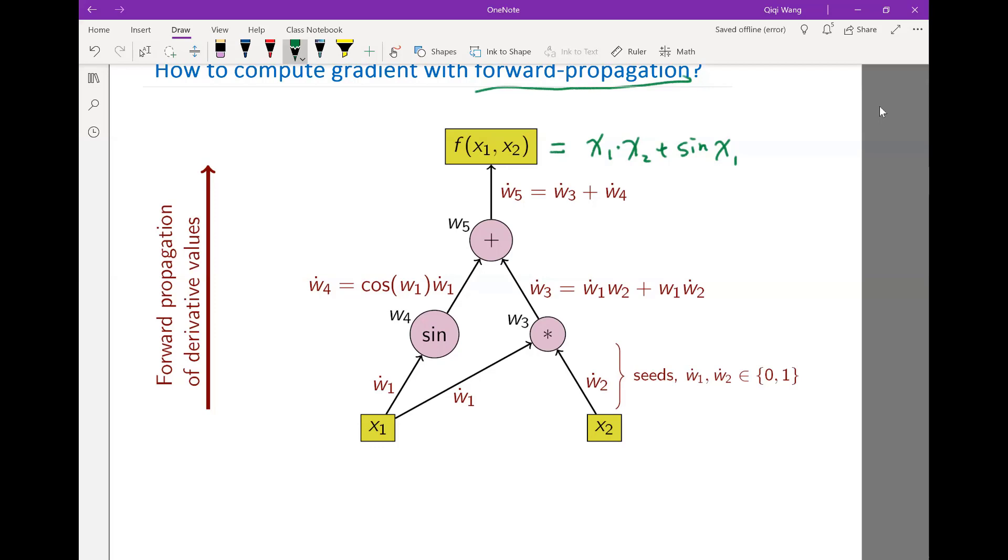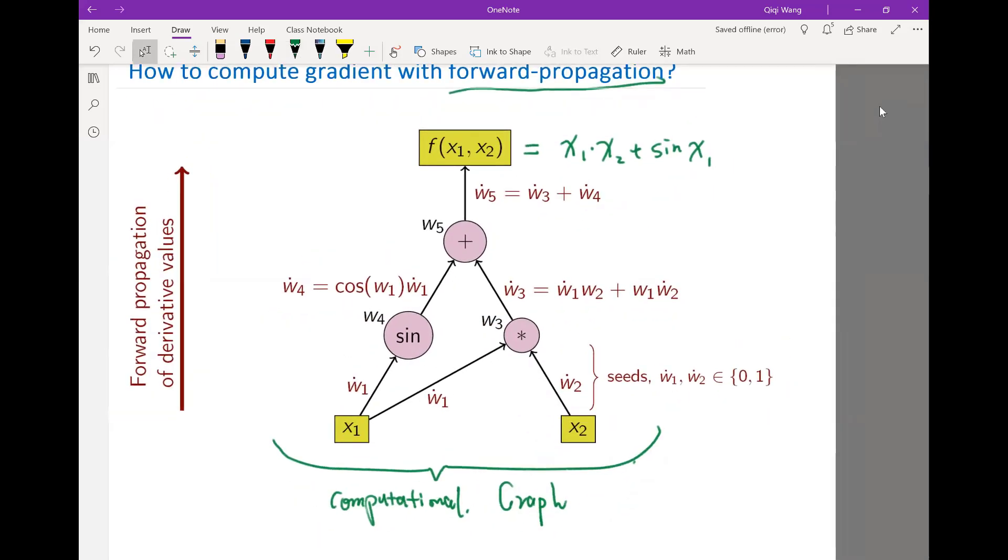You can organize this set of operations into what's called a computational graph. So this graph is acyclic, which means there is no loops in this graph. The computation goes in a fixed order. You don't go back in time during the computation, which means you always have a direction. I'm going to illustrate this very simple operation with this graph.